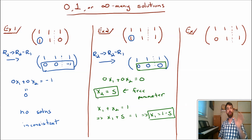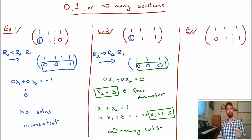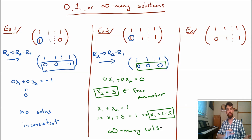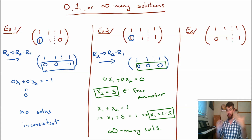Taking those together, there are infinitely many possible solutions. Choose any number s you like — say 100. Then x2 is 100 and x1 is 1 minus 100, which is minus 99. For any value of s, we get a pair (x1, x2) that solves the system. When you have zero rows that don't constrain anything, you get freedom: one variable becomes a free parameter s, and you express the other variables in terms of it.